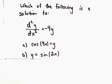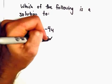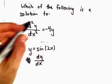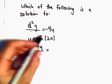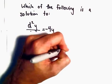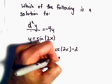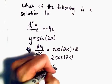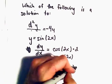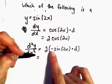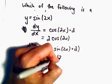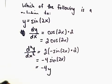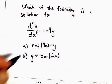Let's try part b: y equals sine of 2x. The first derivative dy/dx: the derivative of sine is cosine of 2x times 2, or just 2 cosine of 2x. The second derivative: the derivative of cosine is negative sine, we leave 2x alone, and chain-rule gives us another factor of 2. That gives us negative 4 sine of 2x. We can replace sine of 2x with y, leaving us with negative 4y — exactly what we wanted. So part b is our solution.